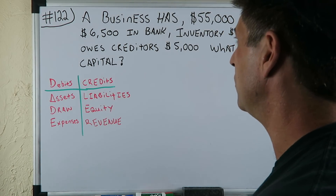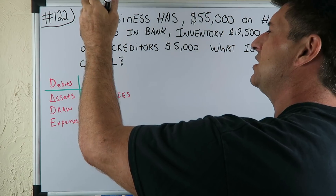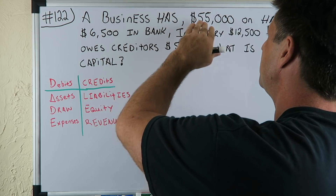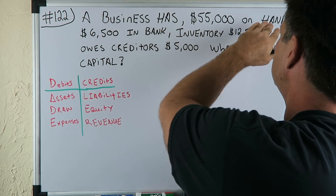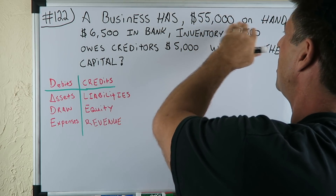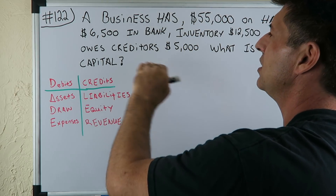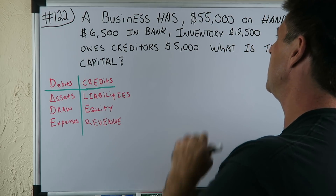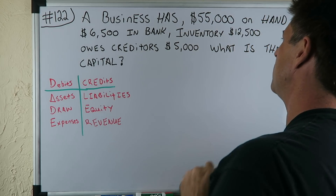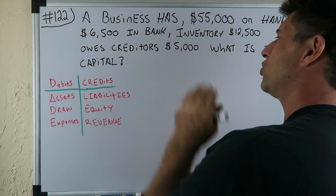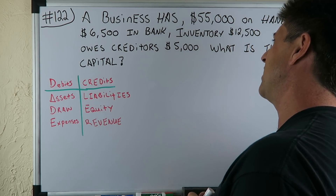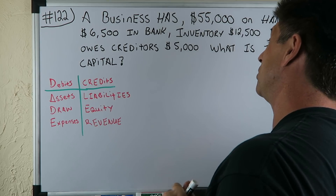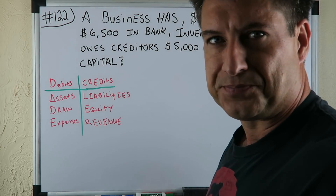Let's get into the video. A business has $55,000 cash on hand, $6,500 in bank, inventory of $12,500, owes creditors $5,000. What is the capital?